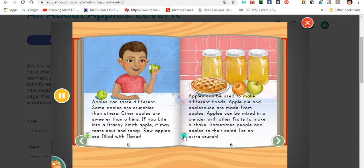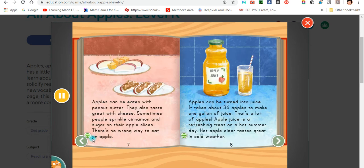Apples can be used to make different foods. Apple pie and applesauce are made from apples. Apples can be mixed in a blender with other fruits to make a shake. Sometimes people add apples to their salad for an extra crunch.